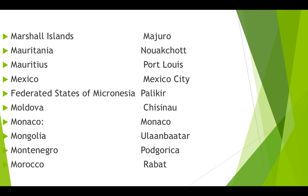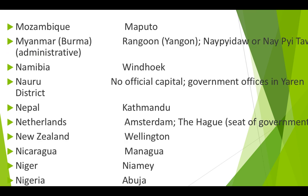Malta — Valletta. Marshall Islands — Majuro. Mauritania — Nouakchott. Mauritius — Port Louis. Mexico — Mexico City. Federated States of Micronesia — Palikir. Moldova — Chișinău. Monaco — Monaco. Mongolia — Ulaanbaatar. Montenegro — Podgorica. Morocco — Rabat. Mozambique — Maputo. Myanmar (that is Burma) — Rangoon/Yangon; Naypyidaw is the administrative capital.